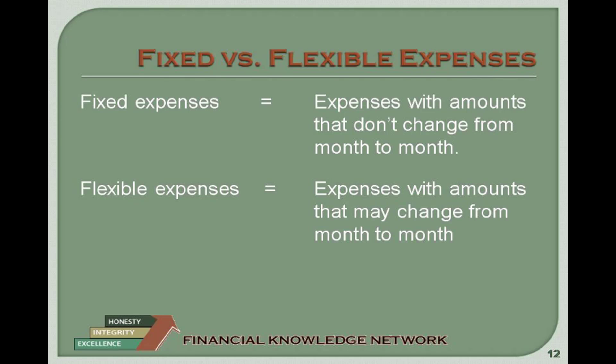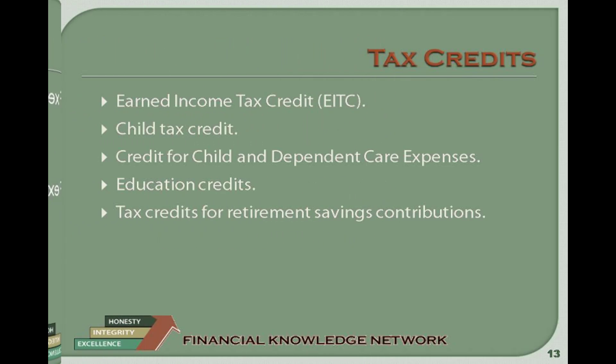Credit for Retirement Savings Contributions. If you make eligible contributions to an employer-sponsored retirement plan or to an individual retirement arrangement (IRA), you may be eligible for a tax credit. The amount of credit you can take depends on your filing status, your adjusted gross income, and your eligible contributions. To claim the credit, complete IRS Form 8880 and submit it with your federal income tax form. A copy of the tax credit application form is available at www.irs.gov or by calling the IRS at 1-800-829-3676 or 1-800-829-1040.